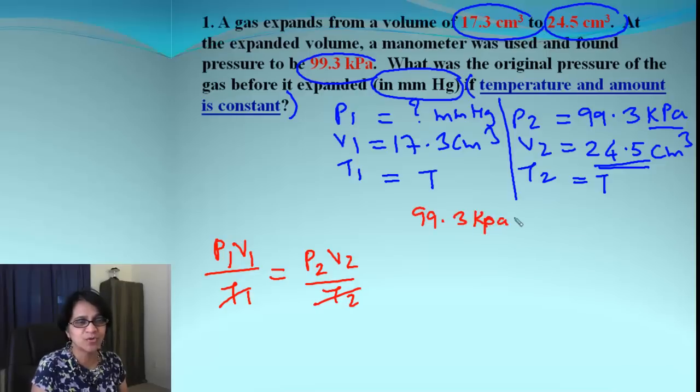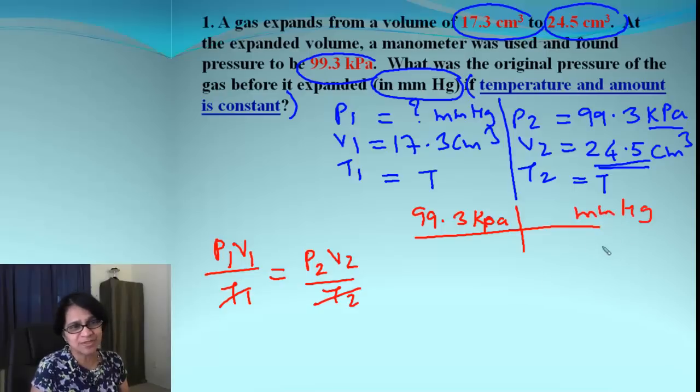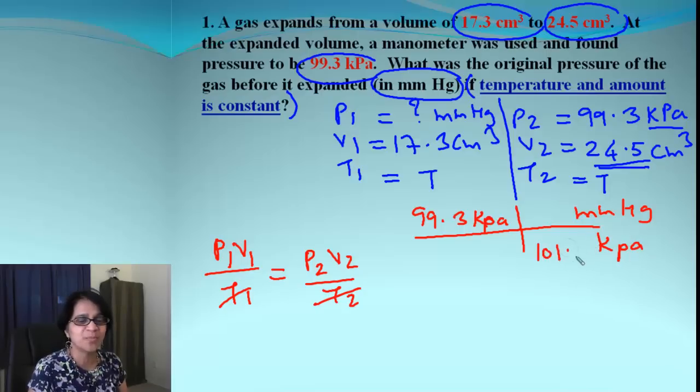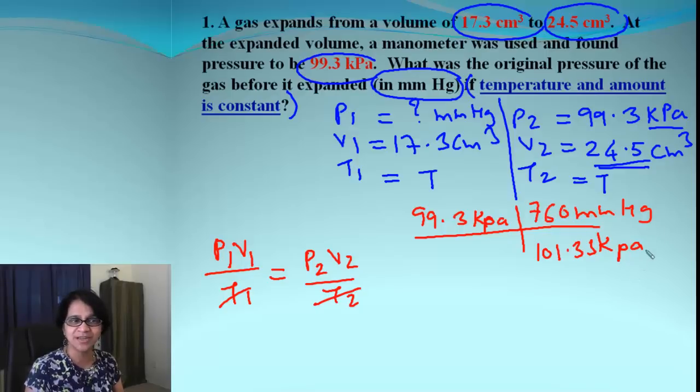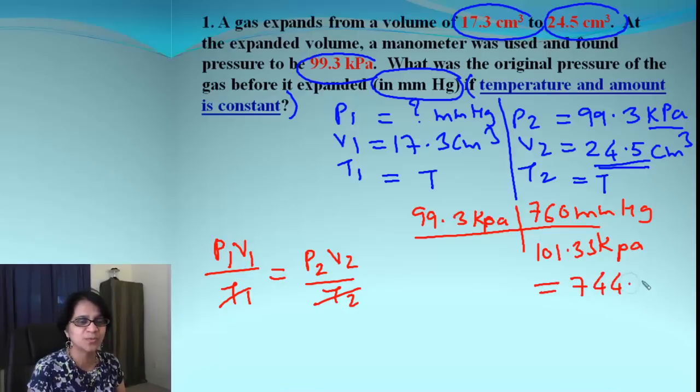So I am going to have my road map going from kilopascal to millimeter of mercury. That means over here I must have kilopascal. And then what do we know about that? We know 101.33 kilopascal will be equal to 760 millimeter of mercury. Using those values, what do we get for pressure? The pressure comes out to be 744.77 millimeters of mercury.